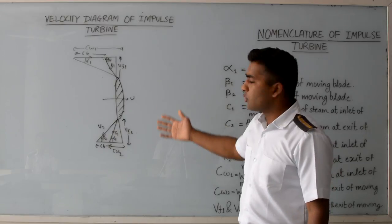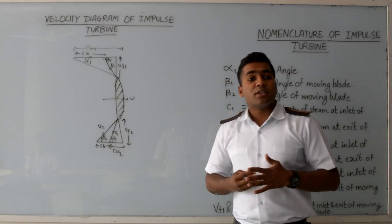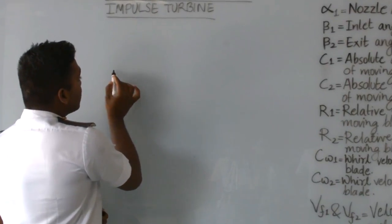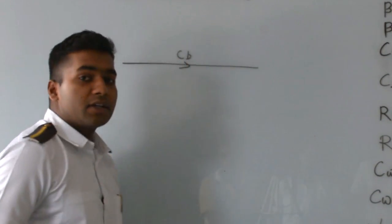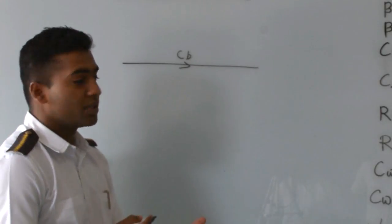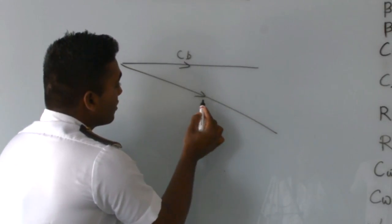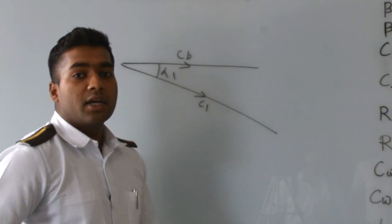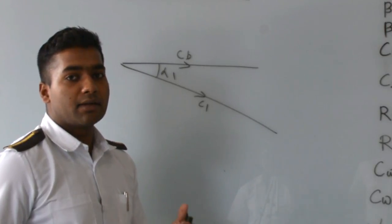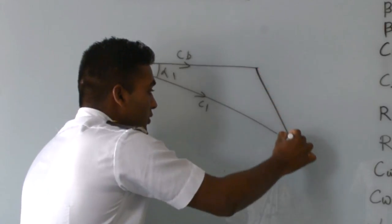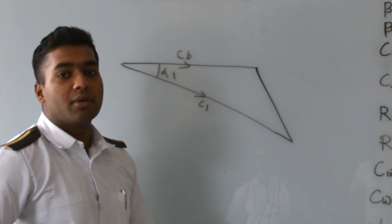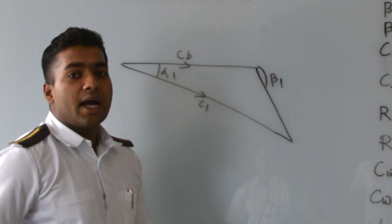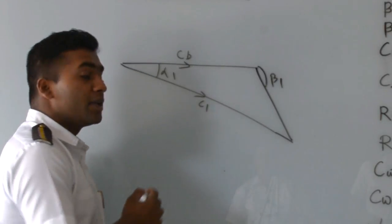Now I will explain the combination of inlet and outlet velocity triangles, which is very important when solving numerical problems on steam turbines. The blade moves with linear speed cv. Steam enters at an angle alpha1 with absolute velocity c1 from the nozzle. Due to the blade's linear velocity, a relative velocity r1 is created at inlet angle beta1. Steam leaves the moving blade at angle beta2 with relative velocity r2.